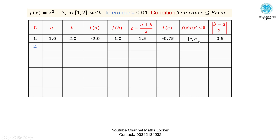Iteration 2: since the root lies in [c, b], set a = c = 1.5. b remains 2. f(a) = f(1.5) = -0.75, f(b) = 1. Midpoint: c = (1.5 + 2) / 2 = 1.75. Putting 1.75 into the function gives f(c) = 0.0625. Check the product f(a)·f(c): both negative — condition satisfied. Root lies in interval [a, c]. Error = |2 - 1.5| / 2 = 0.25.